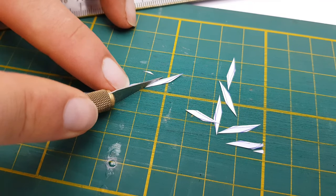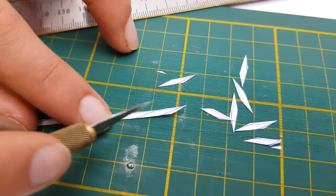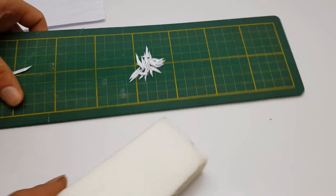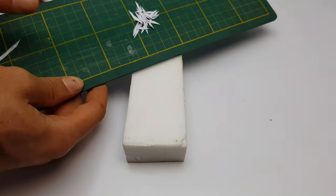You will need to cut about 30 leaves to complete one aloe. Once you have all the leaves you will need to put them on a piece of foam like this.